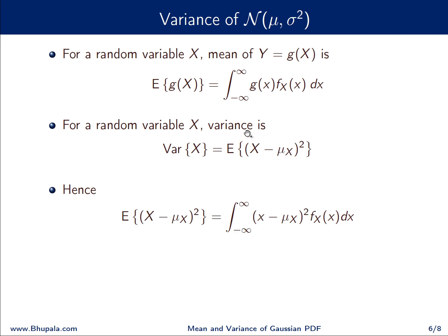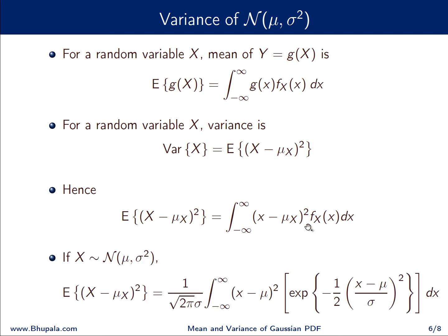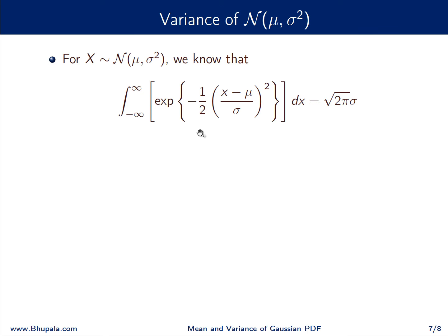Substituting into the expectation formula: E[(X − μ_X)²] = ∫_{−∞}^{∞} (x − μ_X)² · f_X(x) dx. For the Gaussian random variable, replacing f_X(x) with its expression gives: (1 / (√(2π) σ)) × ∫_{−∞}^{∞} (x − μ)² · exp(−(1/2) × ((x − μ)/σ)²) dx.